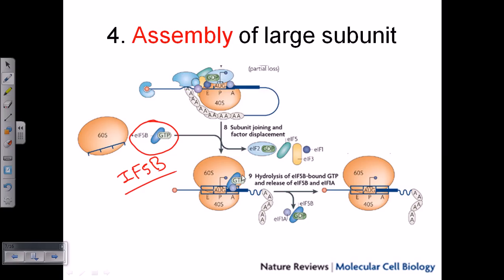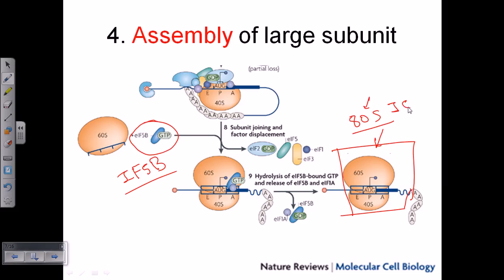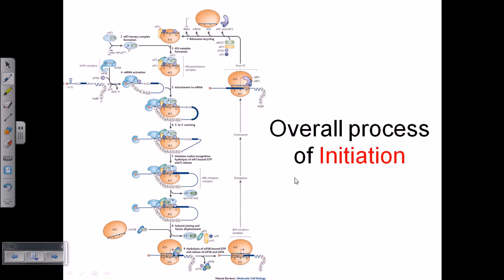After assembly of the 60S complex with the 40S complex, all initiation factors such as eIF3, eIF5, and eIF1 are released. What we are left with is the 60S subunit, the 40S subunit, the mRNA, and the tRNA — the complete translation initiation complex. In eukaryotes this is called the 80S initiation complex for translation, similar to how the 70S initiation complex is formed in prokaryotes, which also consists of the 70S ribosome, mRNA, and tRNA.